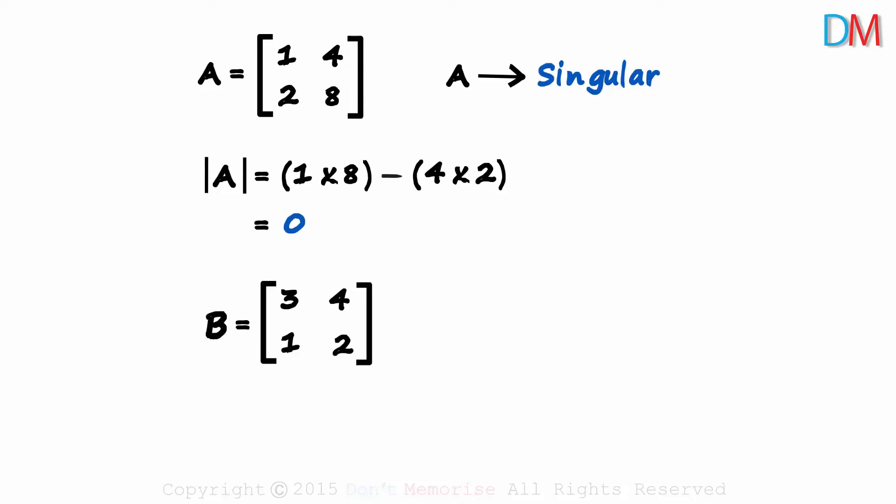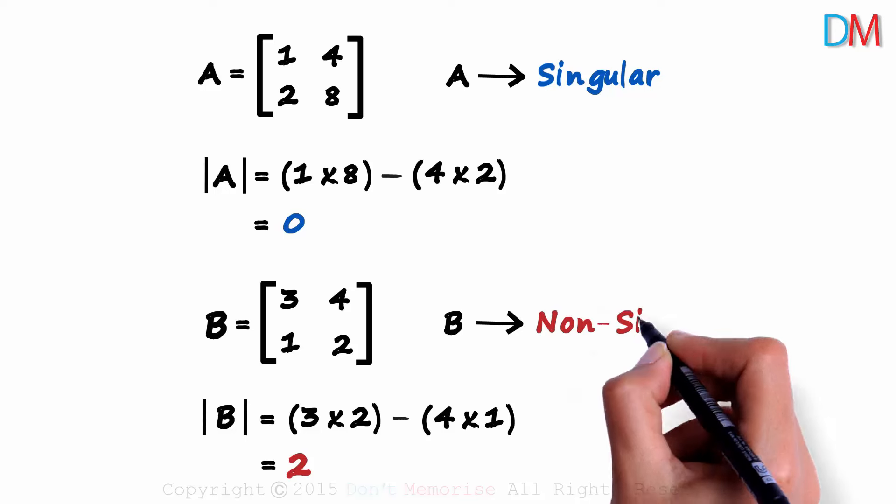To know the answer, we need to find the determinant of B. It will equal 3 times 2 minus 4 times 1. 6 minus 4 gives us 2. Because it's non-zero, we can say that matrix B is non-singular.